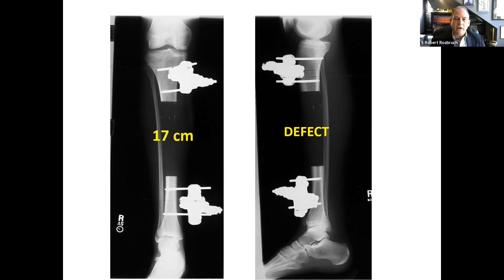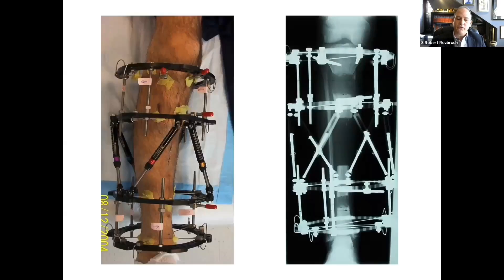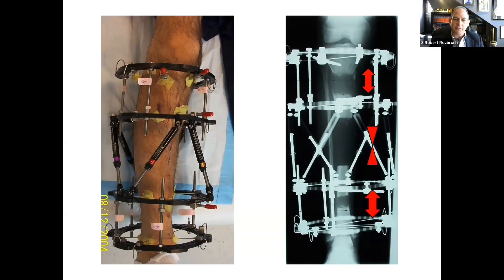The reconstruction was then performed using distraction osteogenesis. What you're seeing here is a trifocal approach — meaning we're lengthening in the proximal tibia, closing down the defect in the middle, and lengthening in the distal tibia — three levels of activity. The middle is where the defect is closing down, and we're transporting bone from the top down and from the bottom up.